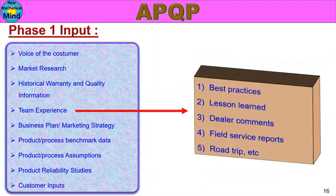Customer inputs also include: Team Experience, Best Practices, Lessons Learned, Dealer Comments, Field Service Reports, and Road Trips. Team experience means we are available to address the customer's requirements. We share reports, improvement details, and road trip experience as part of team experience inputs.